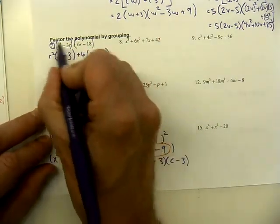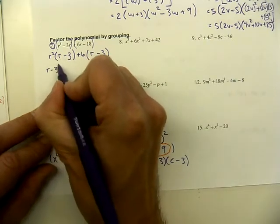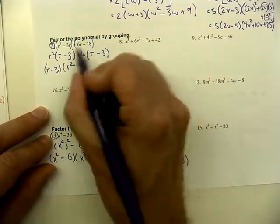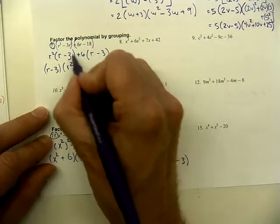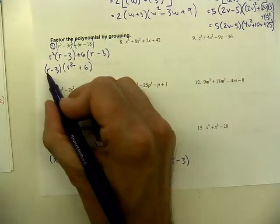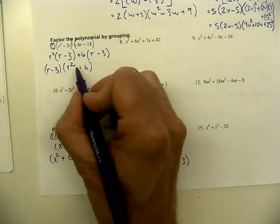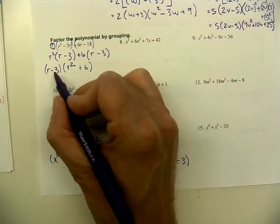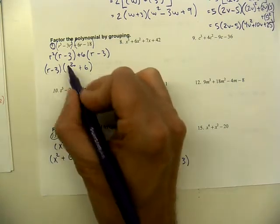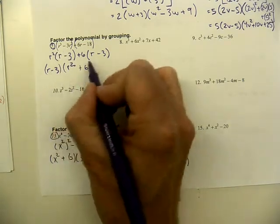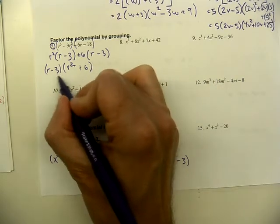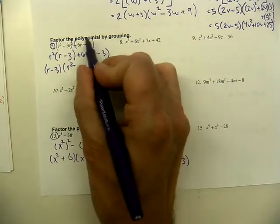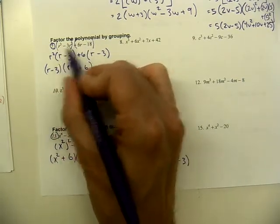Because the binomials are identical, we factor out the common binomial r minus 3. What's left over from the first half is r squared, and from the back half is positive 6. So the answer is r minus 3 times r squared plus 6. You can check by FOILing: first terms give r cubed, outside terms give 6r, inside terms give negative 3r squared, and last terms give negative 18 — matching the original problem.